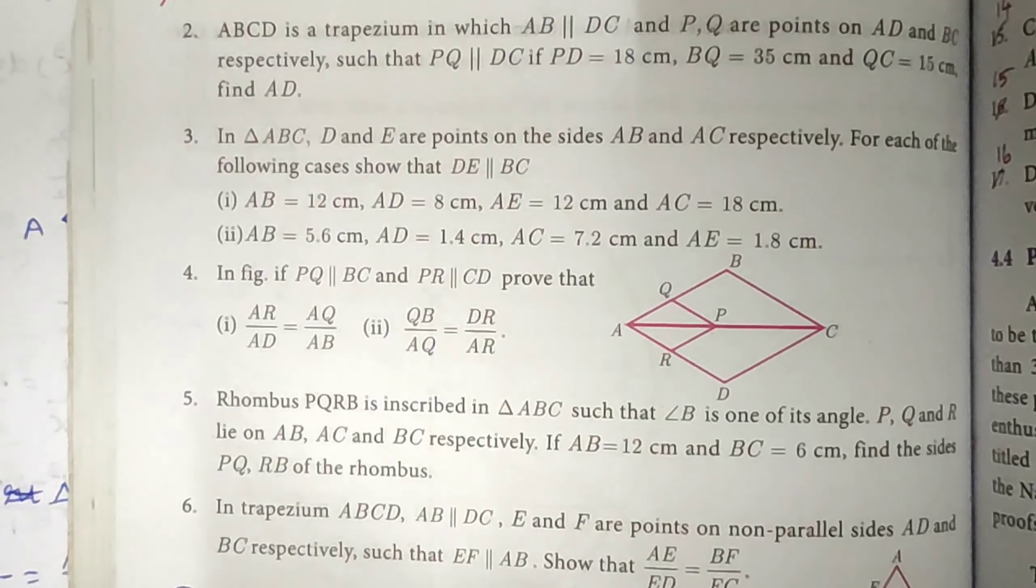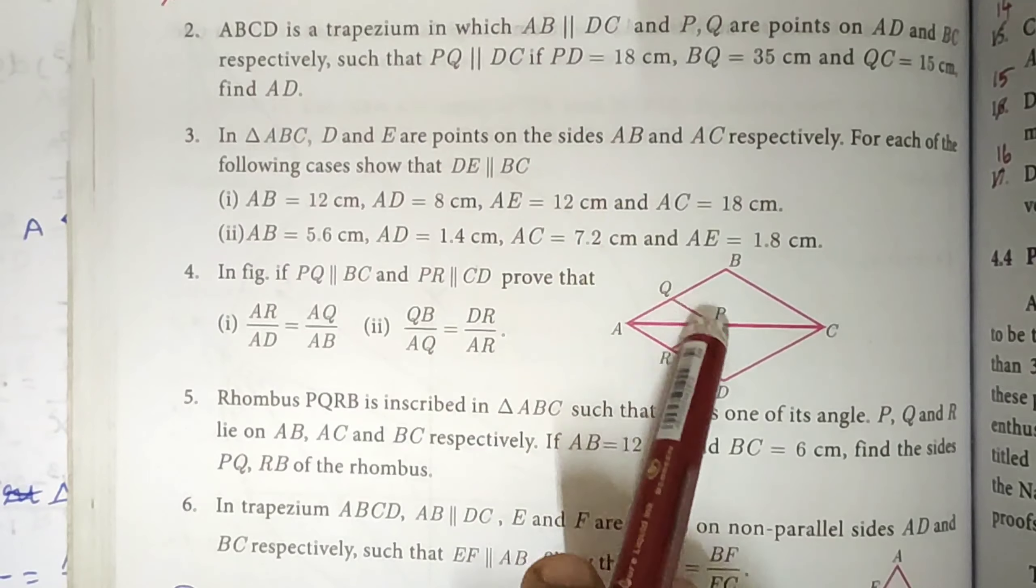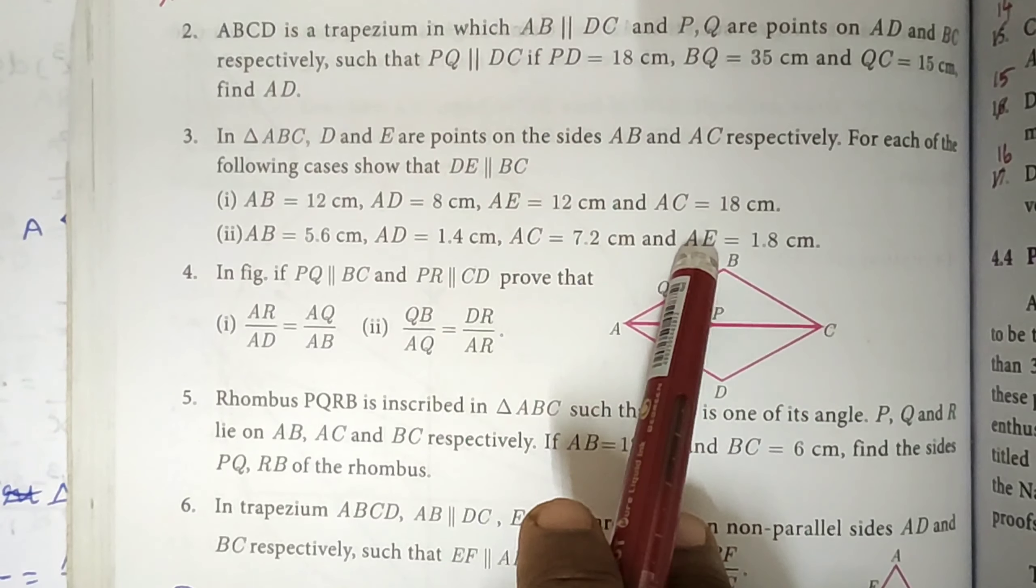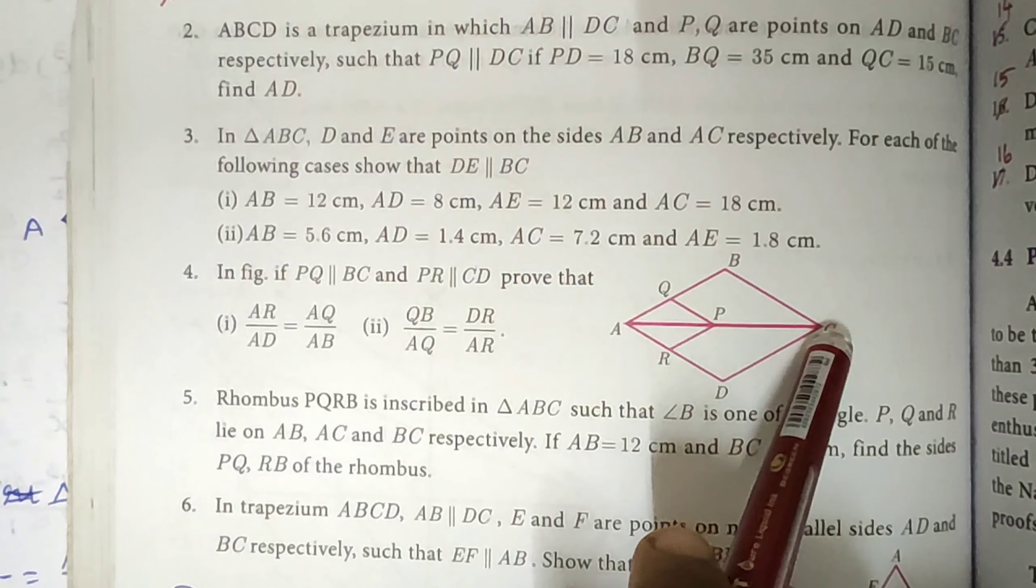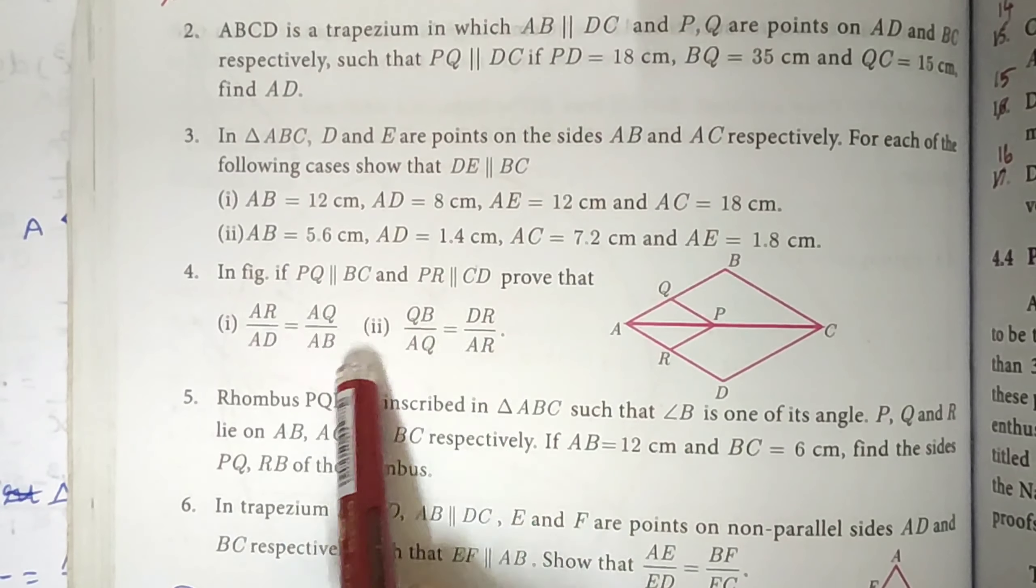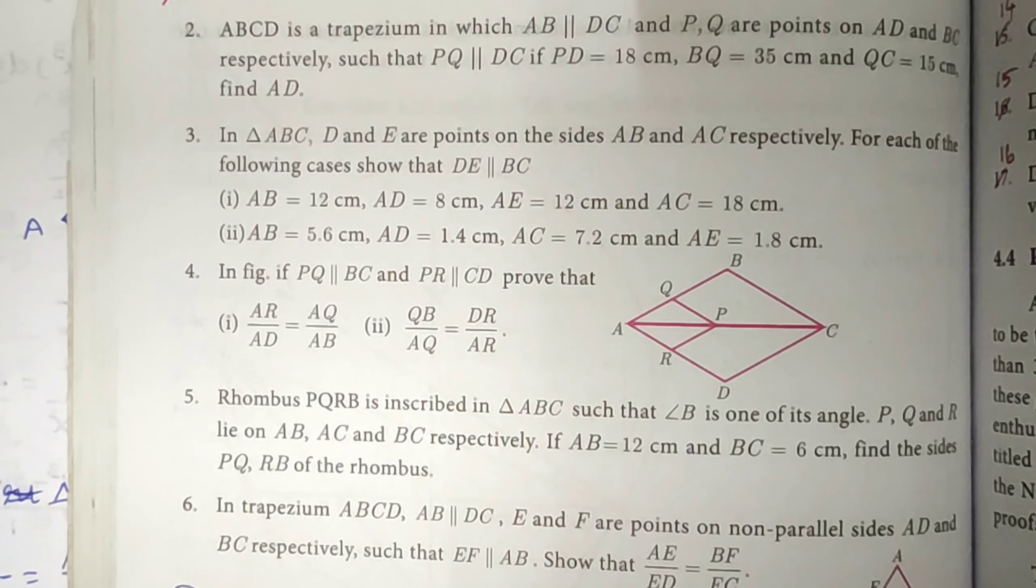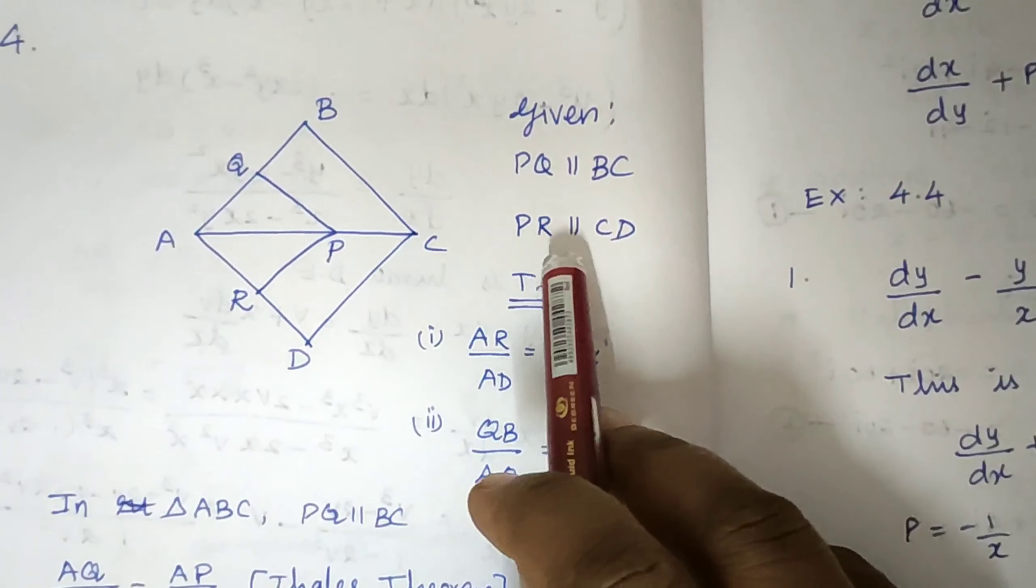We will prove the ratios equal to this. So given to prove, in triangle ABC, PQ parallel to BC.